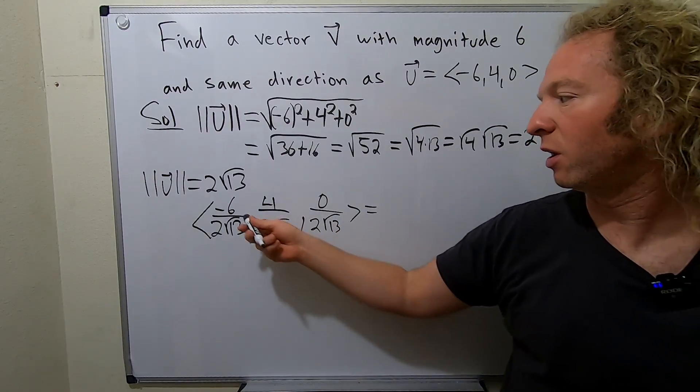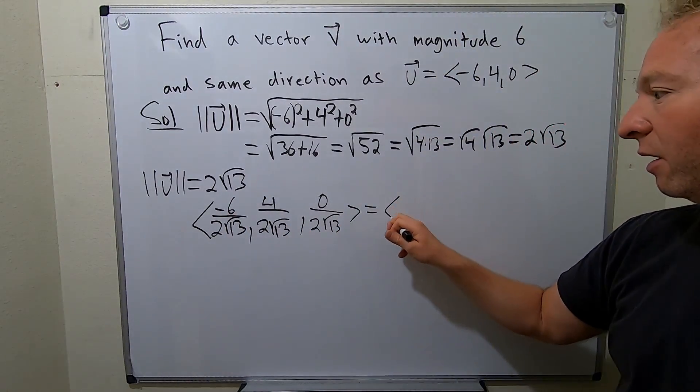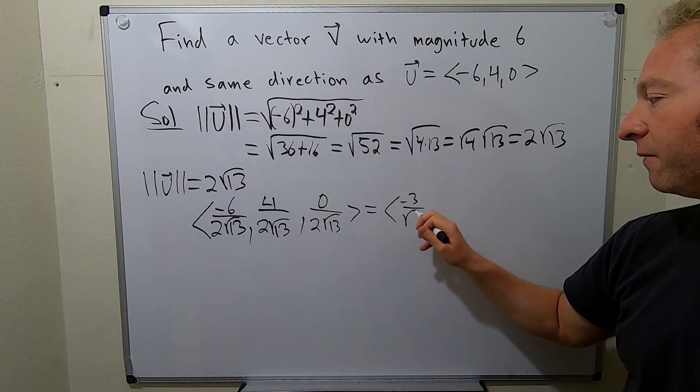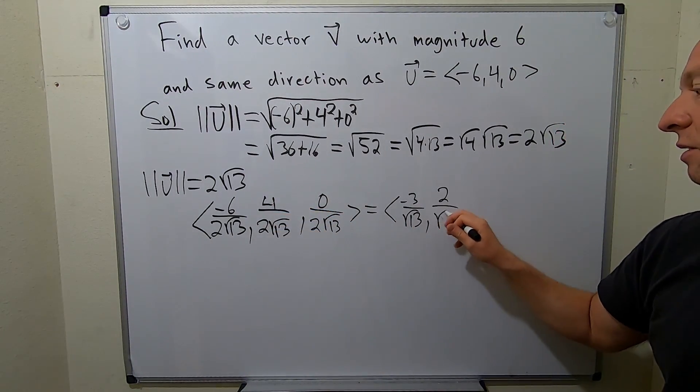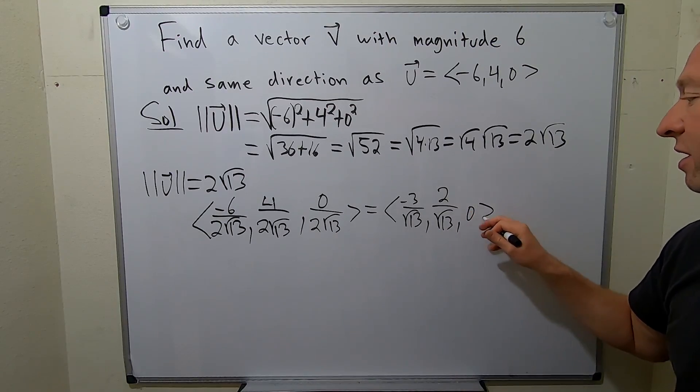So this is equal to, well, it'll be just a negative 3 here up top. So it'll be negative 3 over square root of 13, 2 over square root of 13, going kind of fast. It's all right, though. 0. So this is a unit vector.